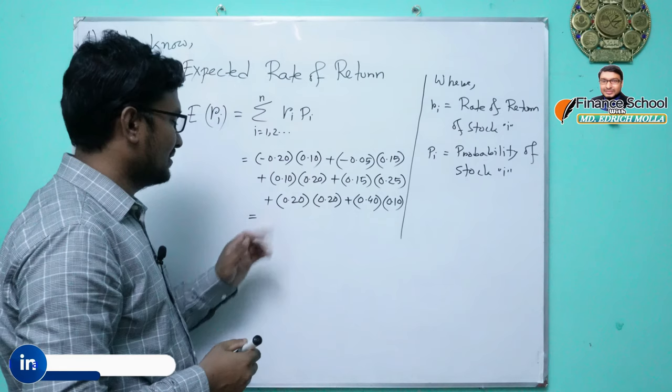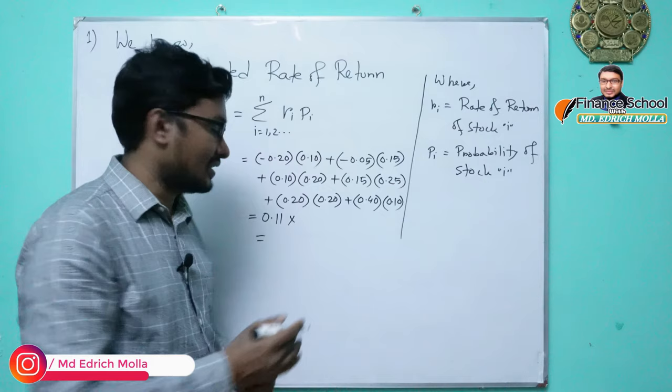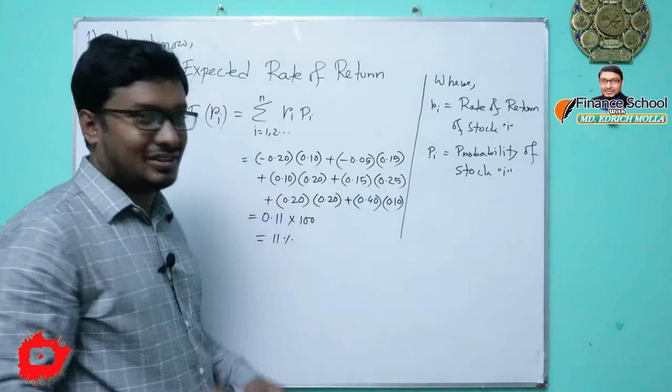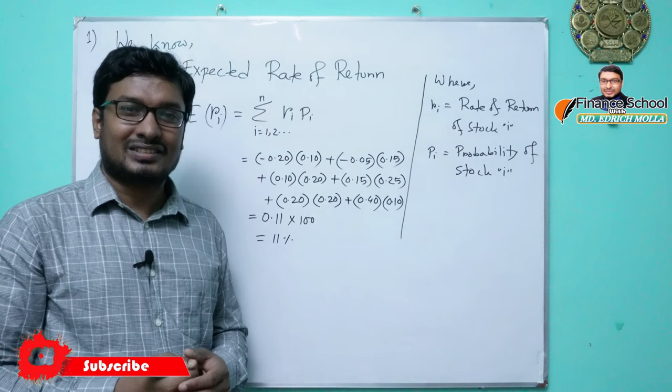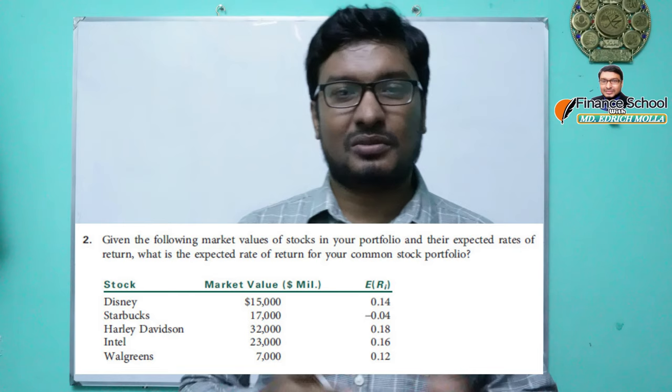If we compute these values, we get 0.11. Multiplying by 100, the expected rate of return is 11%. So very easily we can compute the expected rate of return when we are given the rates of return and their probabilities. I hope you have understood how to find out the expected rate of return.